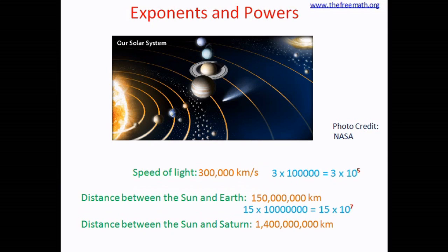The distance between the sun and earth can be written as 15 multiplied by 10 to the power of 7, because there are 7 zeros after 1. The distance between the sun and Saturn can be written as 14 multiplied by 10 to the power of 8, because there are 8 zeros after 1. Now you see the advantages of using exponents — it is easy and convenient to read, write, and understand the value.